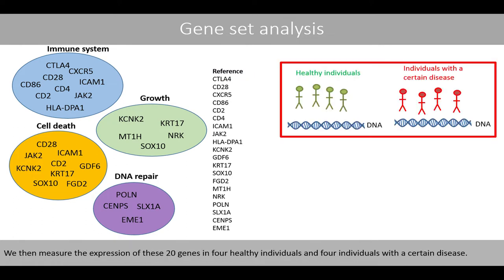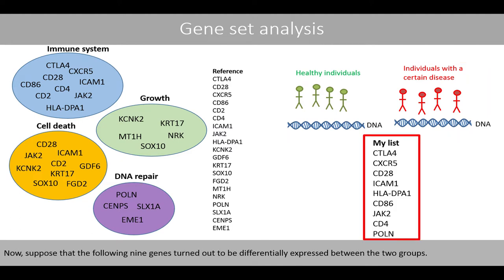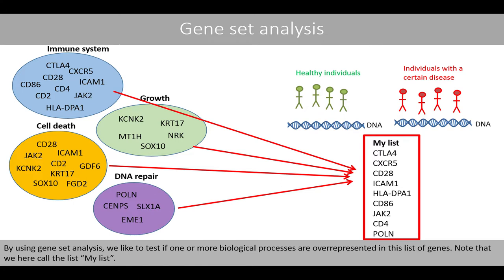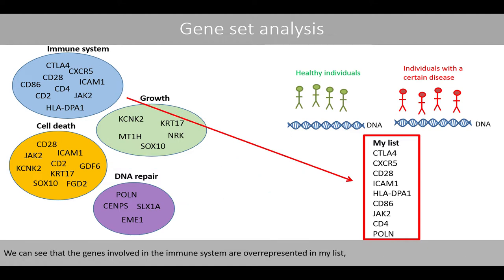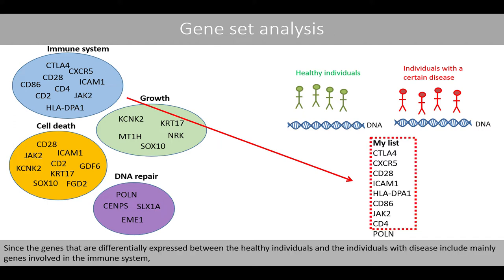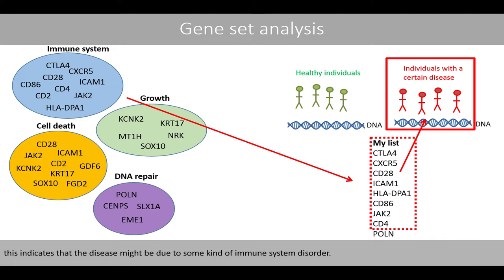We then measure the expression of these 20 genes in four healthy individuals and four individuals with a certain disease. Suppose that the following nine genes turn out to be differentially expressed between the two groups. By using gene set analysis, we like to test if one or more biological processes are overrepresented in this list of genes. We can see that the genes involved in the immune system are overrepresented in my list, because eight of the nine genes in my list are involved in the immune system. Since the genes that are differentially expressed include mainly genes involved in the immune system, this indicates that the disease might be due to some kind of immune system disorder.